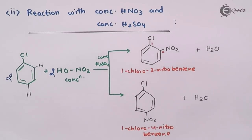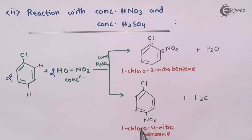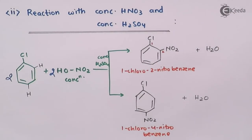In this case, the one present in major quantity — the major product — is basically the para substituent. So the para product, 1-chloro-4-nitrobenzene, is the major product. That is what the second reaction gives us.